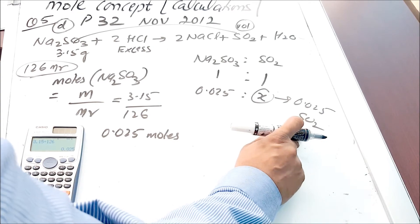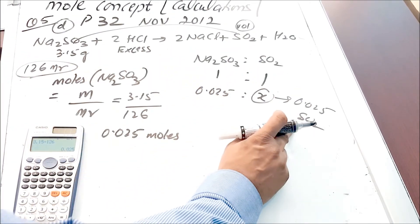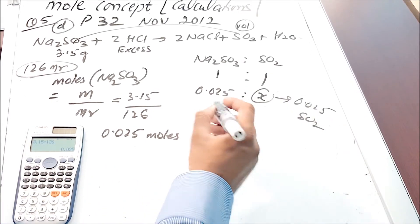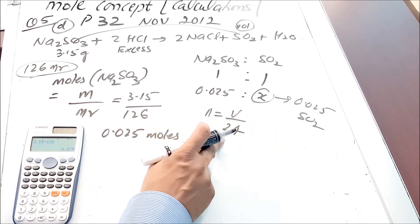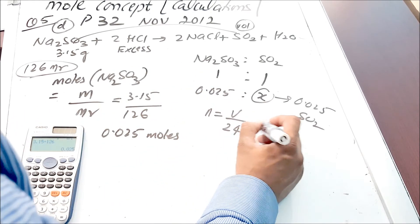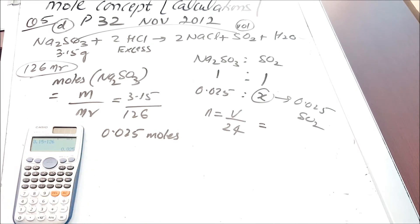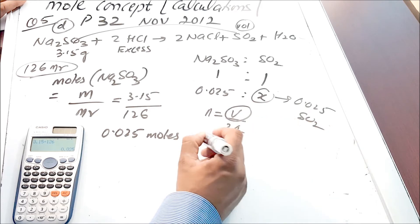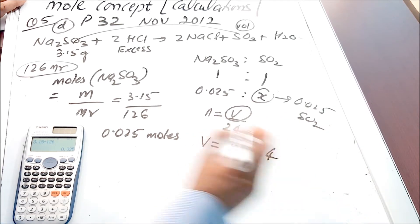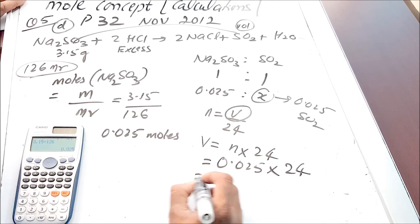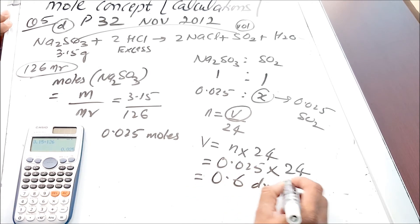Since SO₂ is a gas and the question asks for volume at RTP, we use the formula N = V/24, which gives moles of any gas at room temperature and pressure. Rearranging: V = N × 24. So V = 0.025 × 24 = 0.6 dm³.